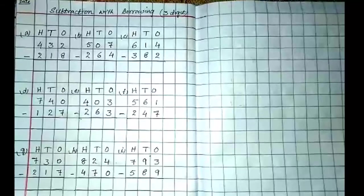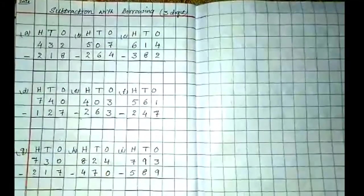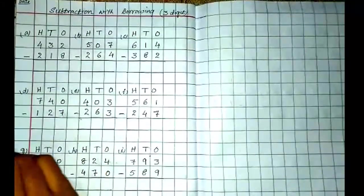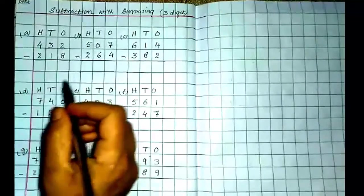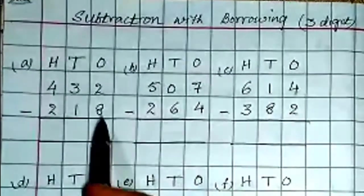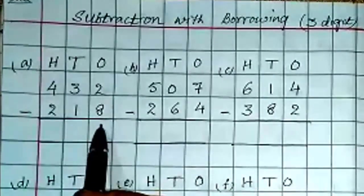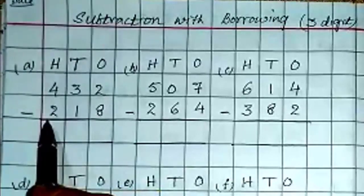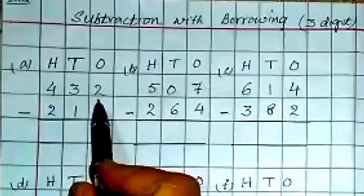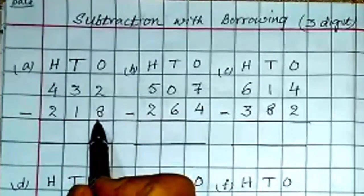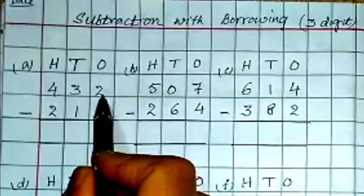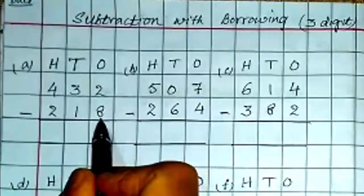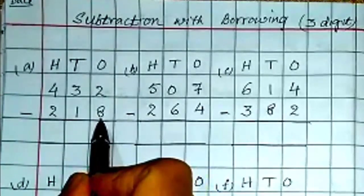Now children, we are doing subtraction with borrowing 3-digit: hundreds, tens and ones. Always you have to start from ones place, then go to tens, then do hundreds place. You have 2 and 8 on ones place. If the first number is smaller than the other number, what do you do? You need to borrow from tens place.